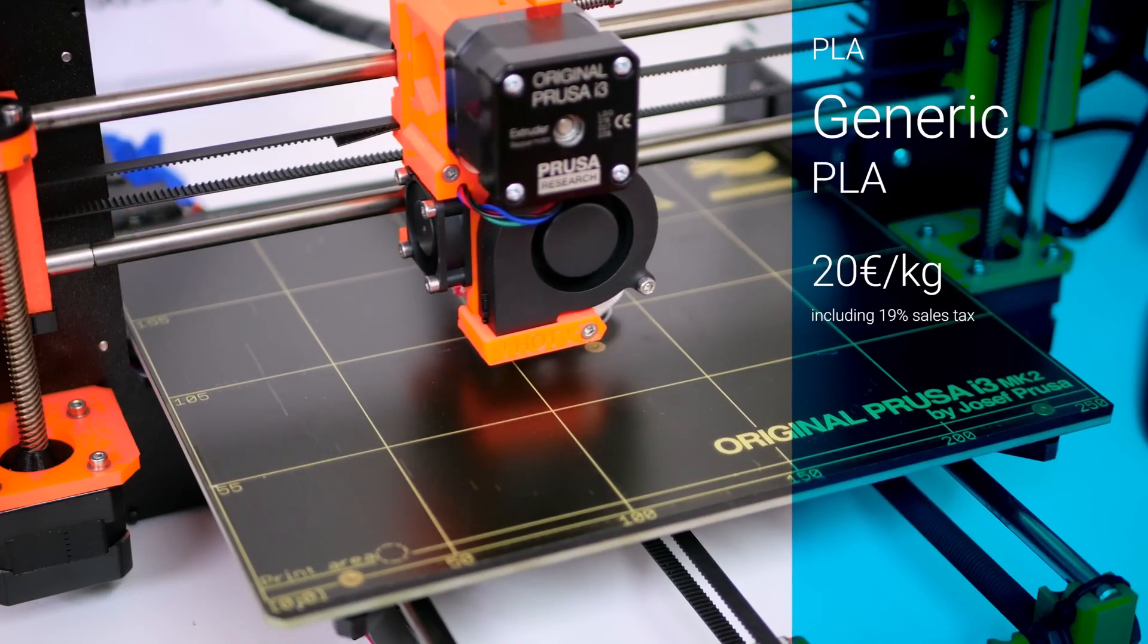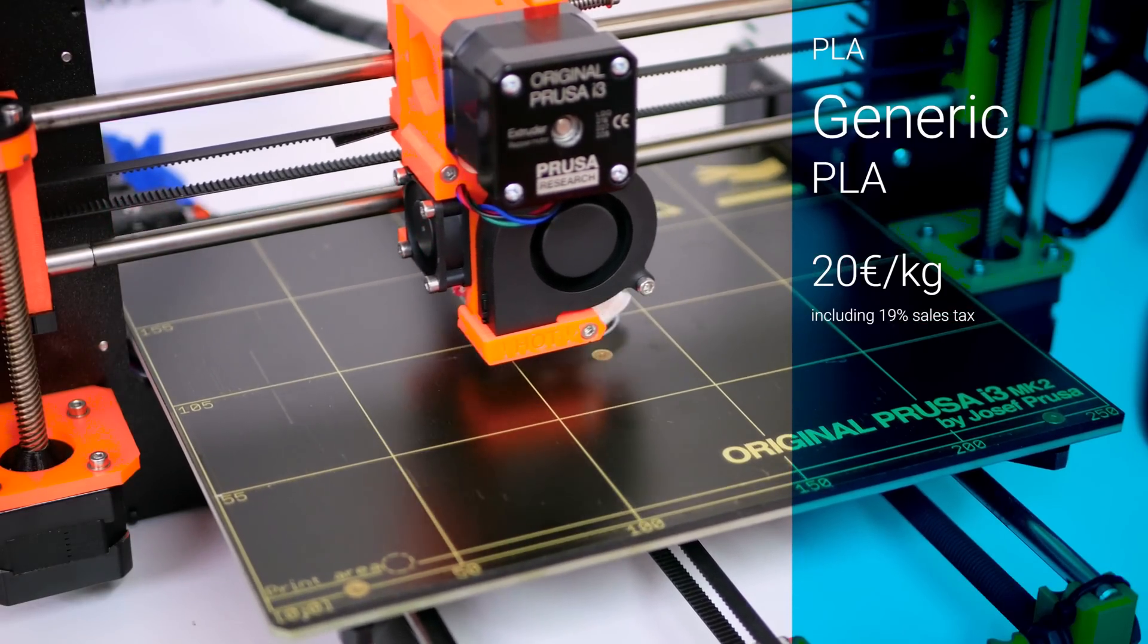This PLA, like most other PLAs, was printed at 210 degrees celsius in a 55 degree PEI bed.